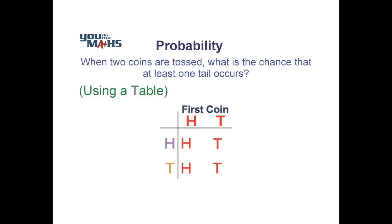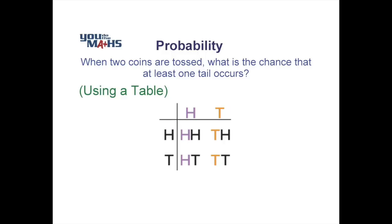We've got a head in the head column for the first coin, and a tail for the tail column of the first coin. We'll now match up the possibilities from the second coin in a different colour so you can clearly see it. Going across in the first row inside the table, we've noted the heads representing the second coin, and in the second row we've got T for tail, again representing the second coin. You'll notice that all the possible outcomes inside the table are the same that occurred when we used our tree diagram.